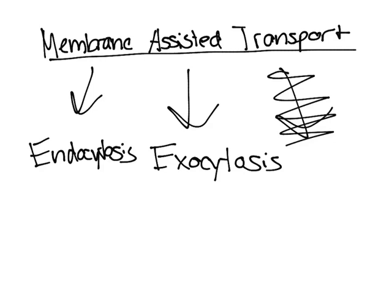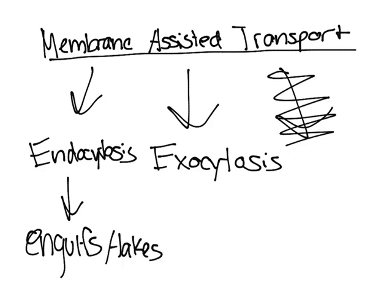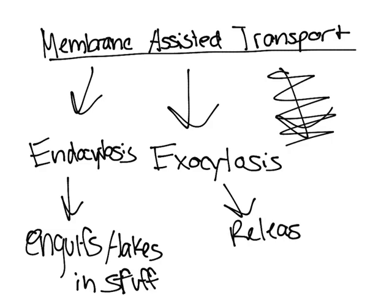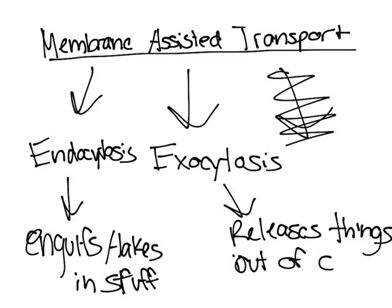Essentially, endocytosis engulfs things — it takes in substances — while exocytosis releases things out of the cell.